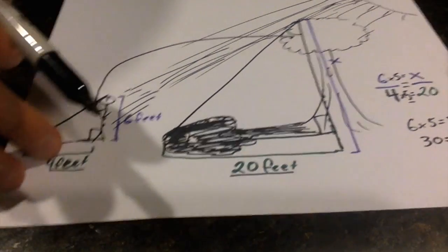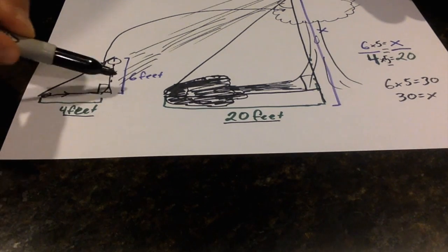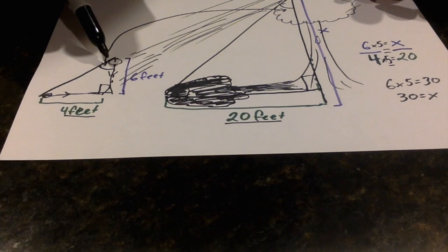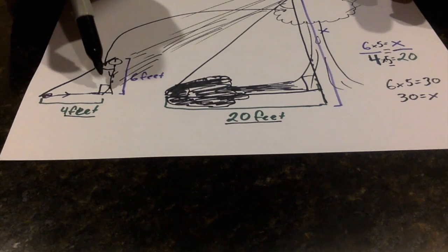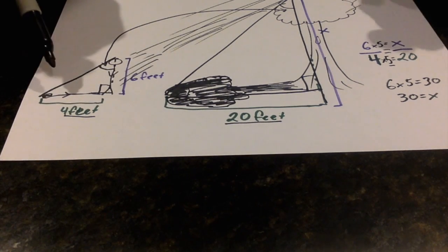So what we've just proven is the value of this tree is going to be proportional to the value of this height, given that these angles are congruent, these angles are congruent, and the shadows are also proportionally long to the various heights.